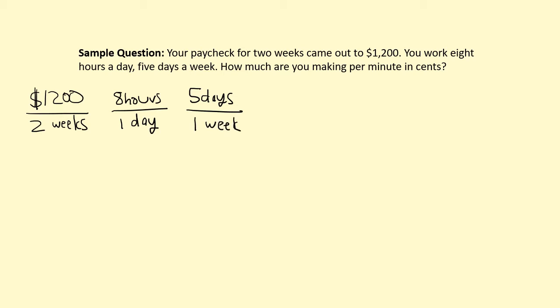Those are all the rates given to us in the problem. Continuing to read, it asks: how much are you making per minute in cents? So even though you get a certain number of dollars per hour, we can divide that up and think of it in terms of how much you make each minute. We're going to have to do a couple of other conversions here.